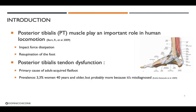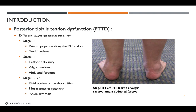Posterior tibialis tendon dysfunction has different stages as described by Johnston and Strom in 1989. In stage 1, there is pain on palpation along the PT tendon and we can also see tendon edema. In stage 2, there is the development of a flat foot deformity with a valgus rear foot and an abducted forefoot, as we can see on the picture on the right of your screen — the stage 2 on the left foot of a PTTD individual with a valgus rear foot and an abducted forefoot.